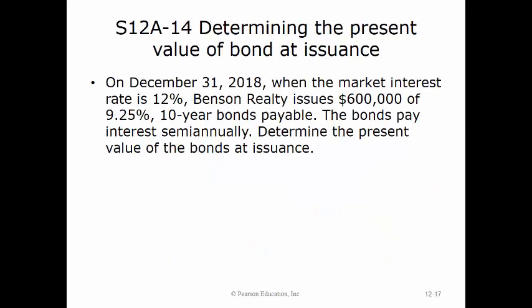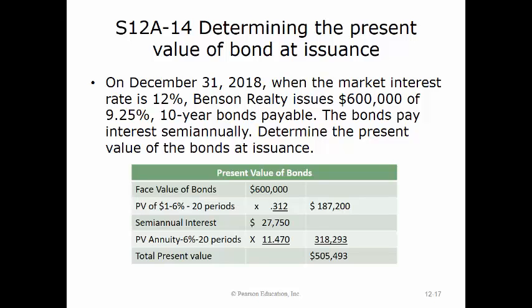On December 31st, 2018, when the market interest rate is 12%, Benson Realty issues $600,000 of 9.25%, ten-year bonds payable with semi-annual interest. Using a 6% semi-annual rate for 20 periods, the present value of the maturity value of $600,000 is $187,200, calculated by multiplying by the single sum factor of 0.312 for 6% for 20 periods.